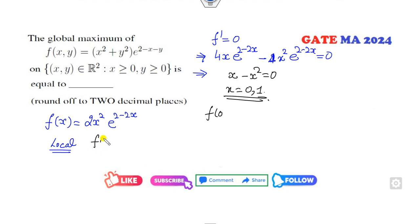What is the value of f at (0,0)? It's zero. What is the value of f at (1,1)? e^0 equals 1, so it will be 2.